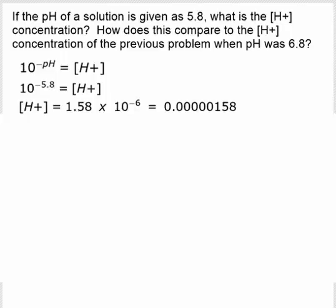And on your calculator, that gives you 1.58 times 10 to the negative 6. Which in decimal form is 0.00000158.